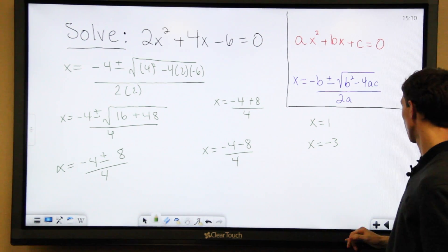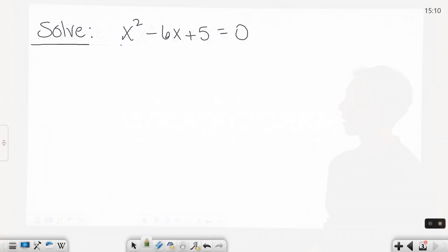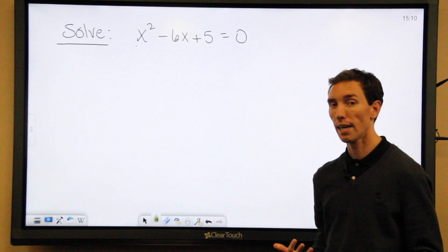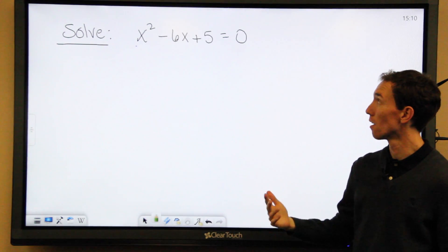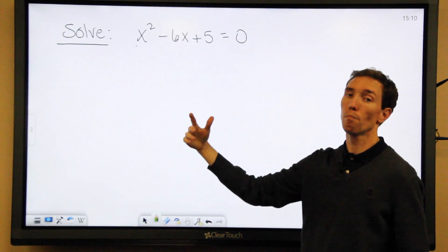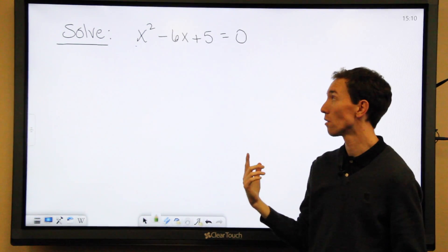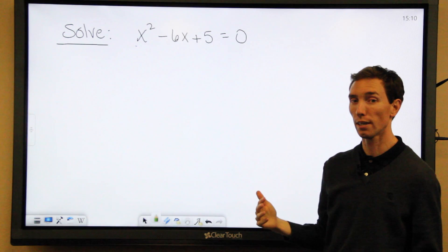So let's try another one. This time we have x squared minus 6x plus 5 equals 0. Remember, figure out what's a, what's b, and what's c. In this case, there's no number in front of our x squared term. But whenever that happens, it's always understood that the number is 1. So keep that in mind when you start plugging into the formula.